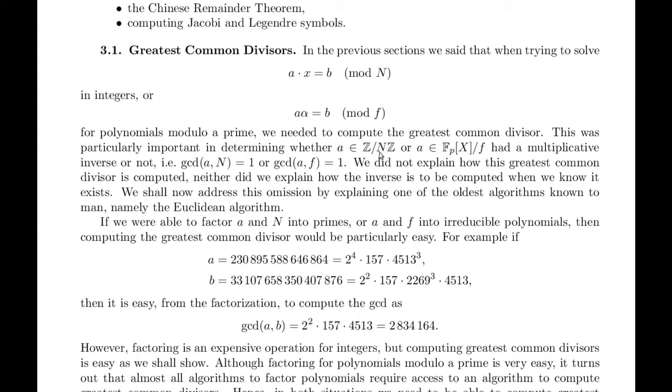We did not explain how this greatest common divisor is computed. Neither did we explain how the inverse is to be computed when we know it exists. We shall now address this omission by explaining one of the oldest algorithms known to man, namely the Euclidean algorithm.